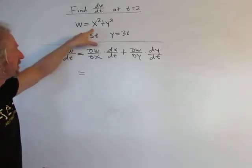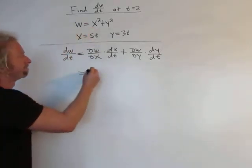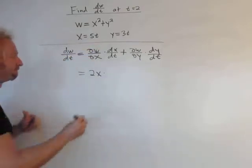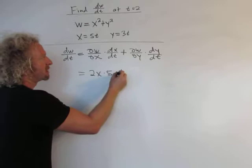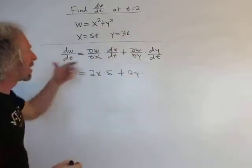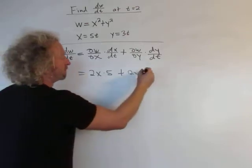So del w del x is simply going to be 2x. And then dx dt, that's going to be 5. Plus del w del y, that's going to be 2y. And then dy dt is just 3.